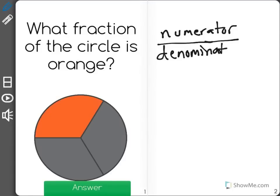Now the numerator represents how many parts there are that we're looking for, and the denominator is how many total pieces.